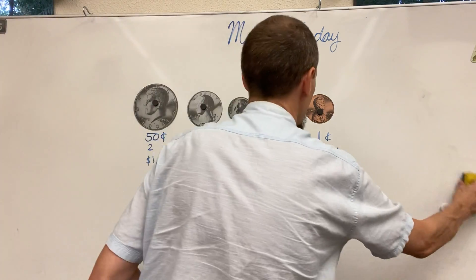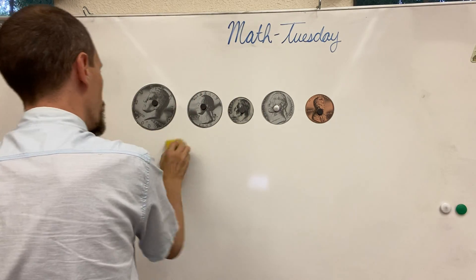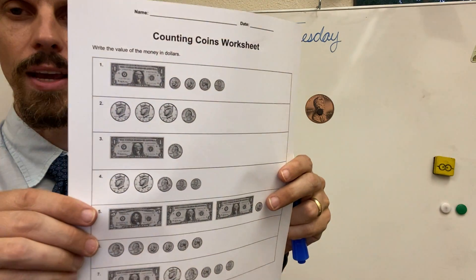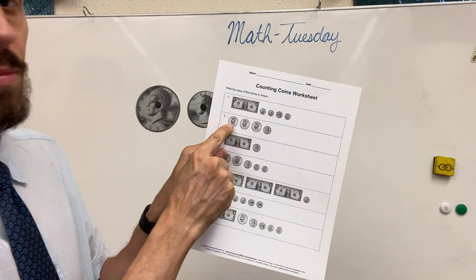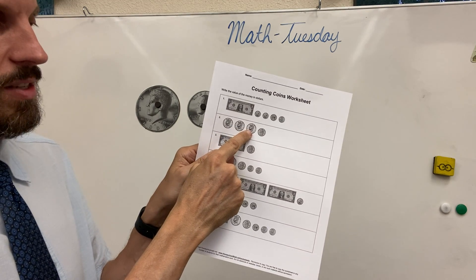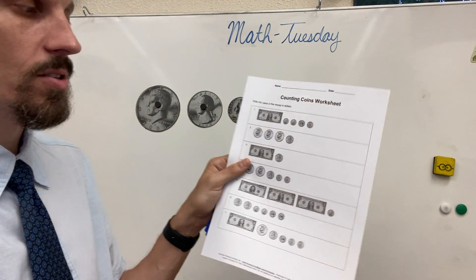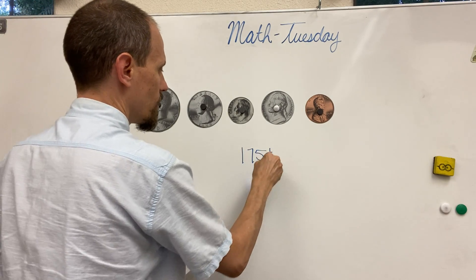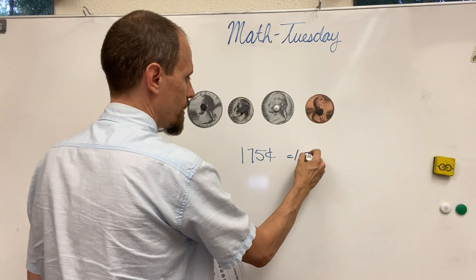Okay, now let's get into our worksheet. So Tuesday, your money worksheet — you're going to count. Let's go — we're going to count by 50s: 50 cents, 100 cents, 150 cents. What's 150 plus 25? That'd be 175 cents. So we have 175 cents. But are we going to leave it as 175 cents? We don't want to do that. So it's going to equal $1.75.